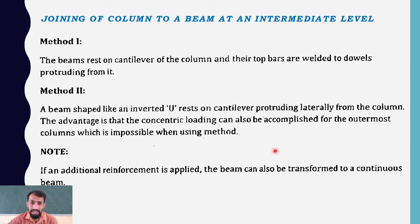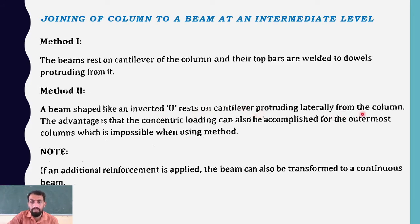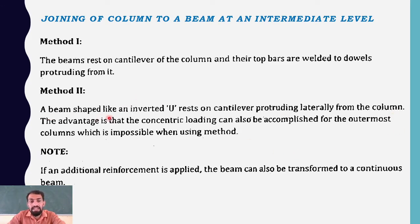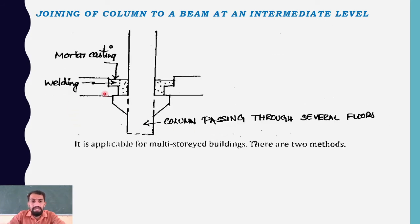There are two methods for this joint. Method one: beams rest on a cantilever of the column and their top bars are welded to dowels projecting from it. Method two: a beam shaped like an inverted U rests on a cantilever projecting laterally from the column. The advantage of method two is that a concentric load can also be accommodated, which is impossible with method one for outermost columns.